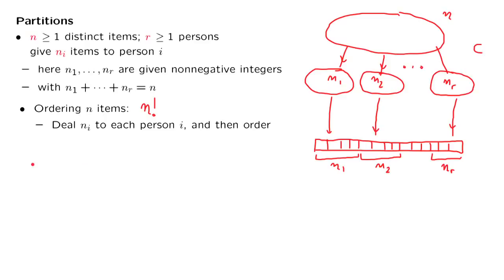In how many ways can this process be carried out? We have C choices on how to partition the given set into subsets. Then person 1 has n1 factorial choices on how to order the n1 items that that person possesses. Person 2 has n2 factorial choices for how to order the n2 items that it possesses.